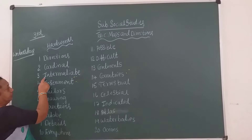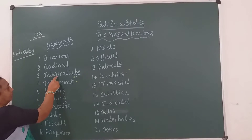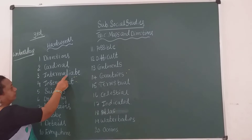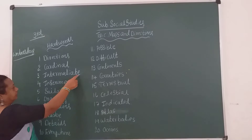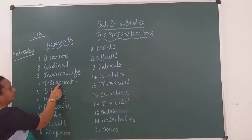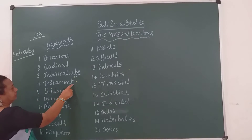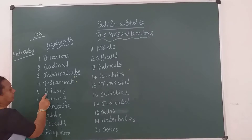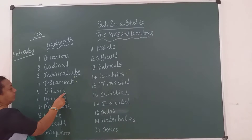Third one: intermediate. I-N-T-E-R-M-E-D-I-A-T-E. Fourth one: instrument. I-N-S-T-R-U-M-E-N-T, instrument. Fifth one: sailor. S-A-I-L-O-R-S, sailors.